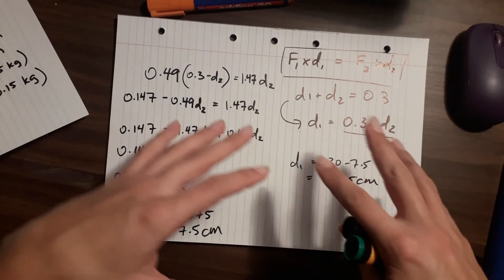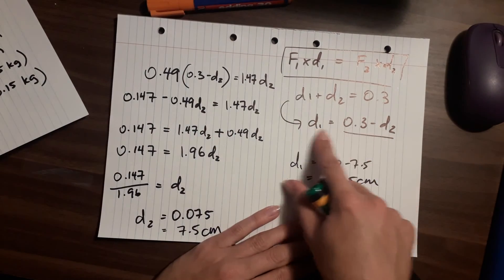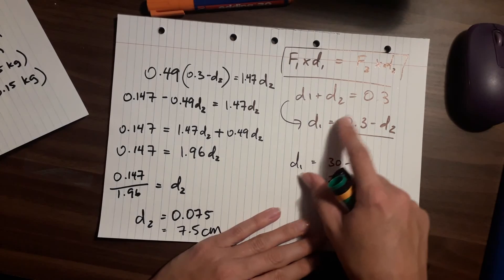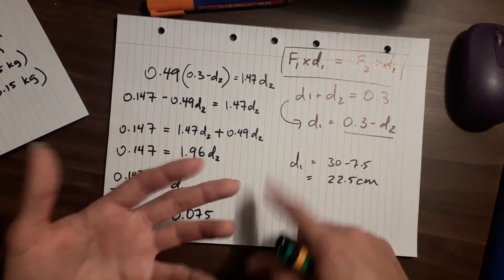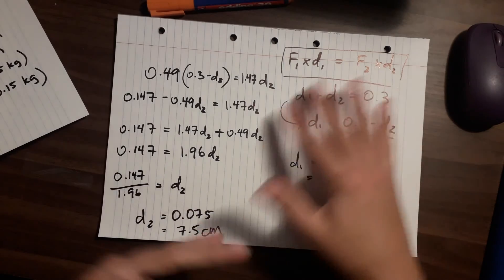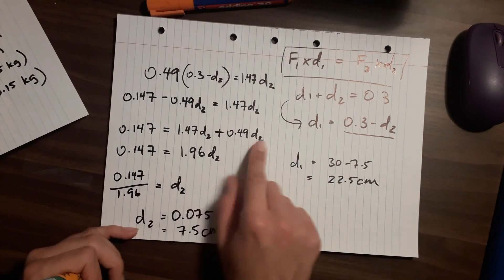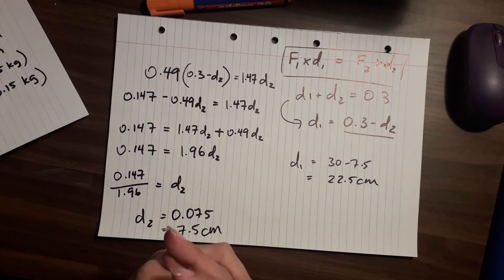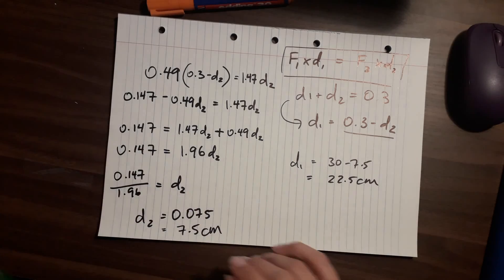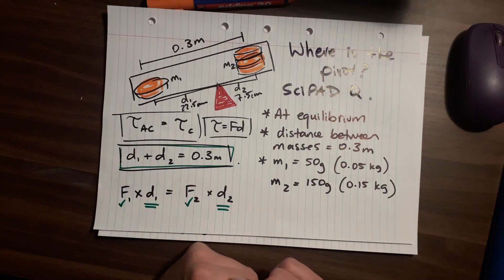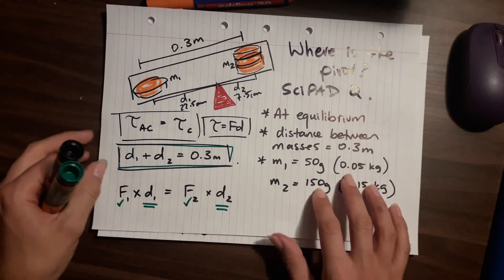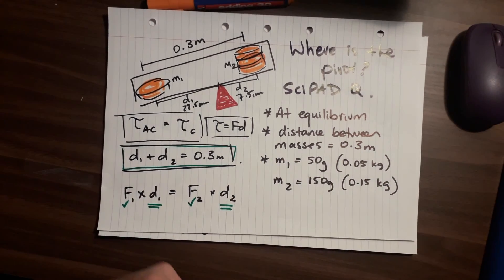You could have done this the other way around — rearranging d1 as (0.3 minus d2) and solving for d1 directly instead. Try it and see if you get the same number to confirm you've done it right. I hope that helps. This is a full-blown excellence question because it relies on substitution with unknown values.